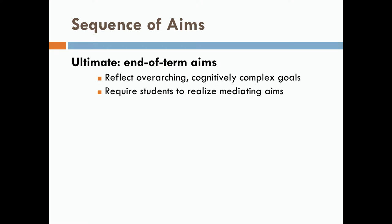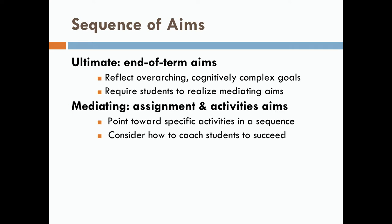AIMS happen at three levels. Often course-level AIMS are named ultimate, end-of-term AIMS. They reflect overarching, cognitively complex learning goals that you have for your students, and they require students to realize what are called mediating AIMS — assignment activity AIMS, the kinds of things students need to do on their way to meeting a larger goal.